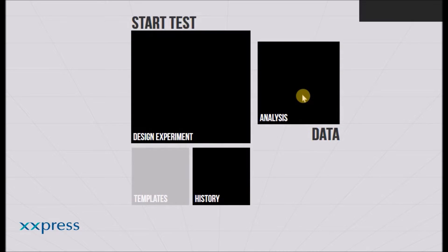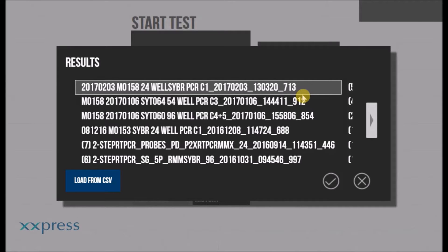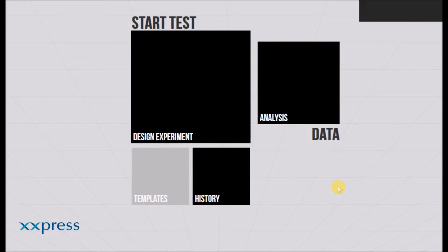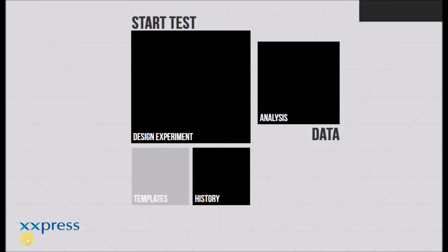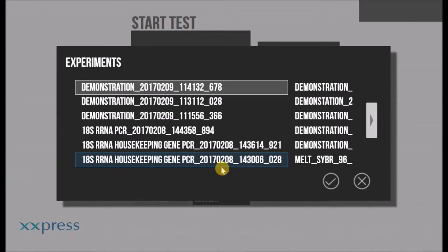In the analysis tab is a list of all the previous run results. Click on any of these to enter and view the results. The history tab lists all the previous run protocols performed on that machine. Click on any of these to load that particular protocol and use it again.